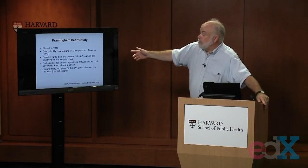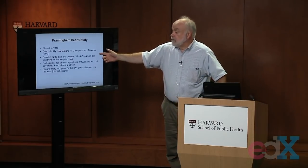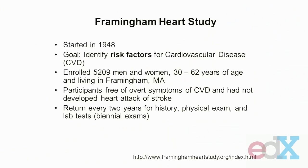So they enrolled people 30 to 62 years old, free of cardiovascular disease and any symptoms of cardiovascular disease. The plan was to follow them for 20 years and record these outcomes: the development of stroke, the development of hypertension, and the development of coronary heart disease.